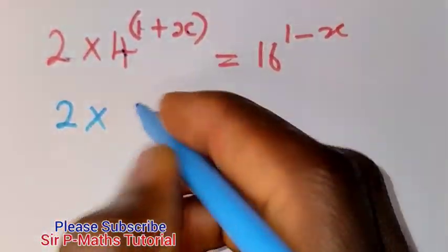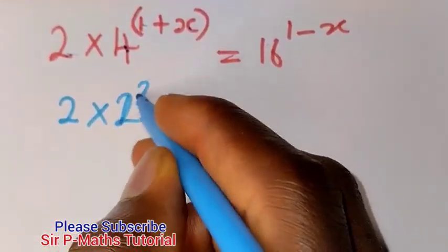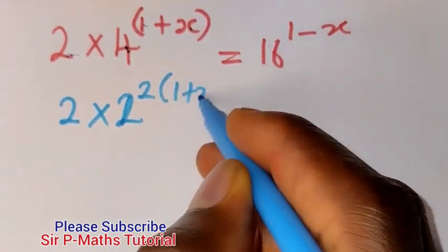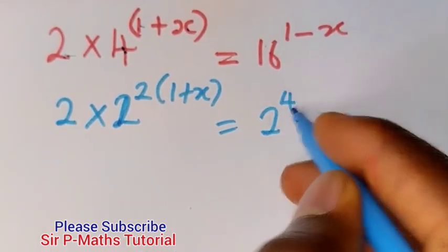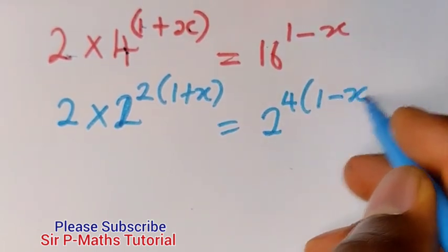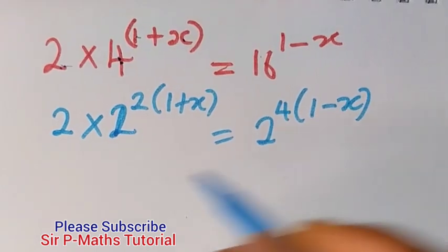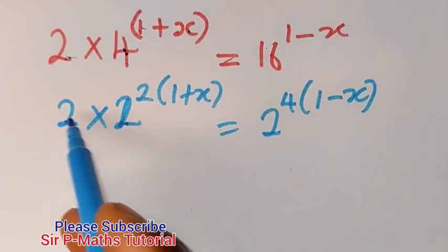So I will have 2 times 2 raised to power 2 into 1 plus x equal to 16 I will have 2 raised to power 4 into 1 minus x. Now having done that, these 2 and these 2 and these 2 are multiplying.